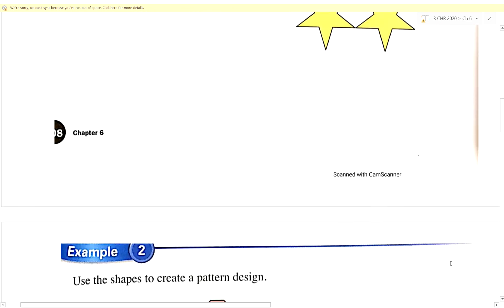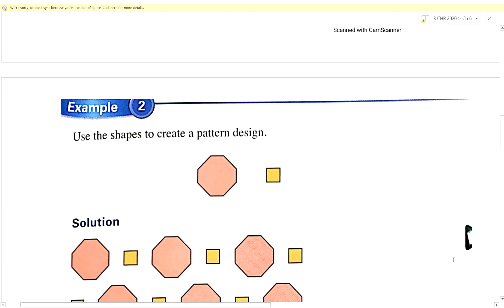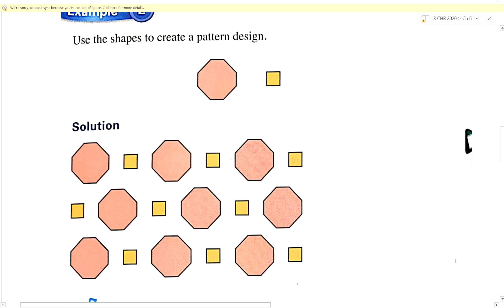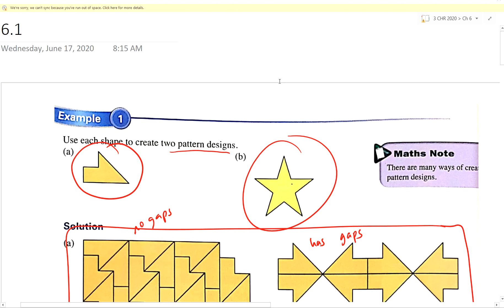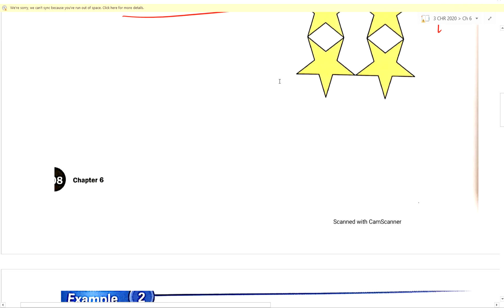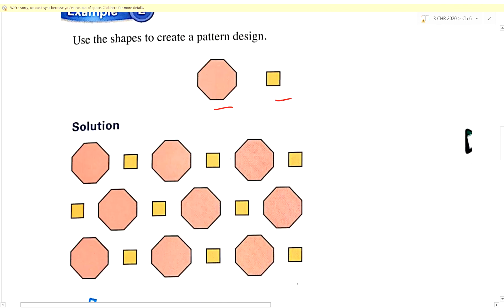Now in example two in your textbook, this is an example of using two shapes to create one pattern. Earlier on, we were only creating patterns using one shape. So here is an example of how we can use two different shapes to create a pattern.